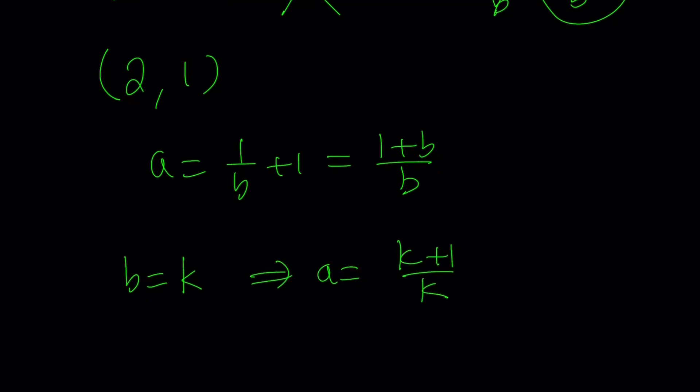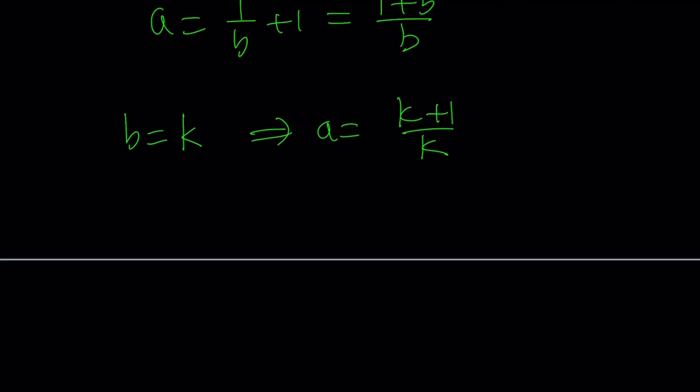then a would be k plus 1 over k. So basically, if you are looking for real solutions, then there will be infinitely many that can be written as k plus 1 over k, comma k, such that k is a real number. So these are going to give you all the solutions, basically. Obviously, k does not equal 0, right? Because that's undefined.